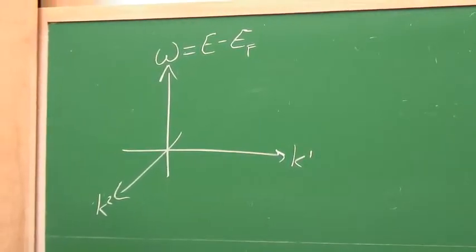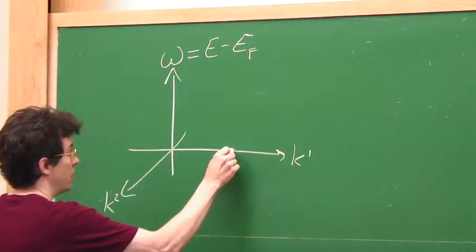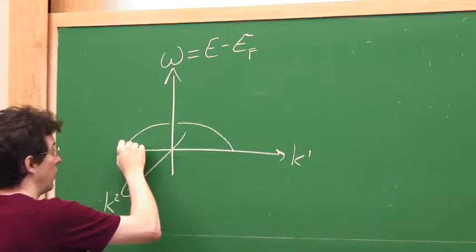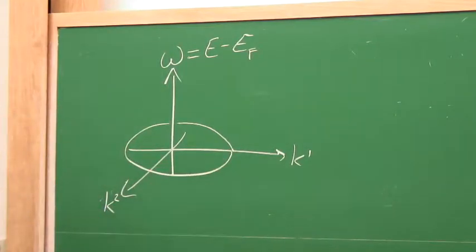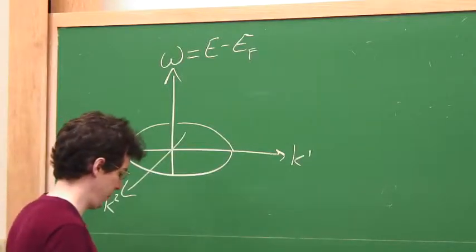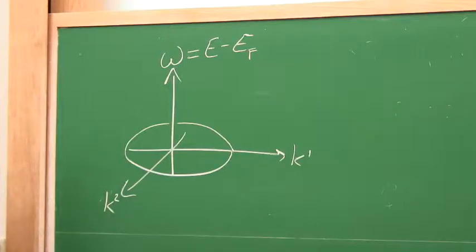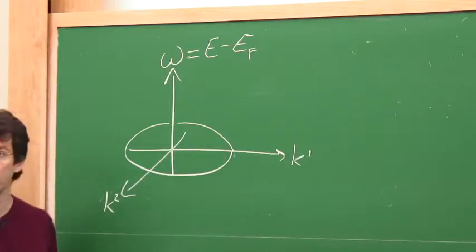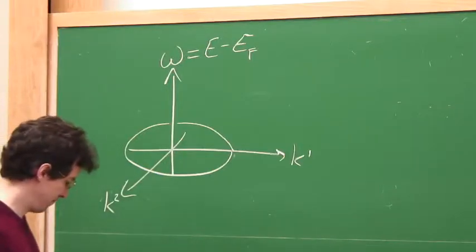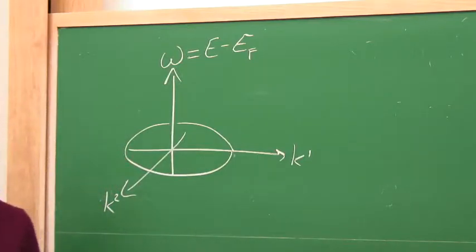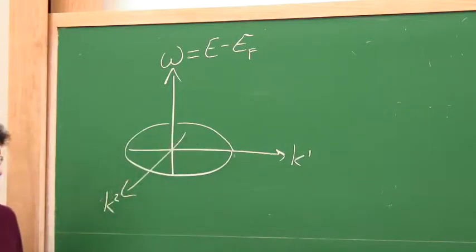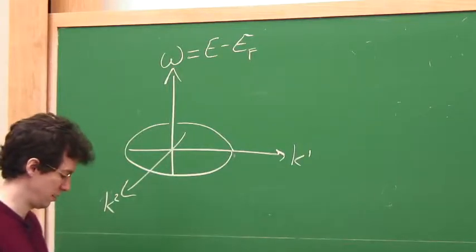One of the features from earlier lectures was that in the normal, non-superconducting state, black holes with finite chemical potentials are dual to theories that have a Fermi surface, defined as a place where there is singular spectral weight in the Green's function, indicating a long-lived, low-energy quasi-particle. Although we don't really understand the details of the field theory — we know it's a strongly interacting Chern-Simons theory with bosons as well as fermions — nevertheless the Green's functions for fermionic operators have this feature, very suggestive of a Fermi surface.